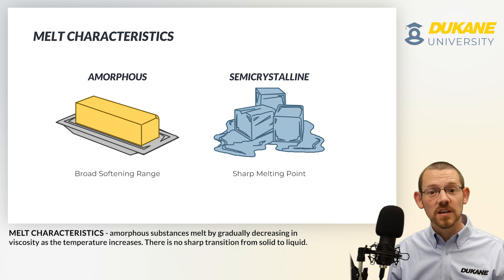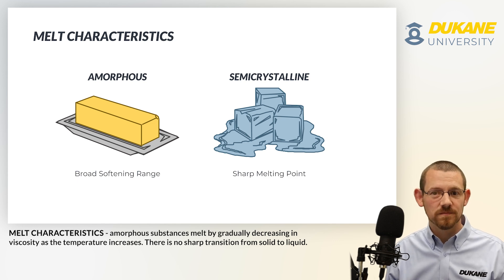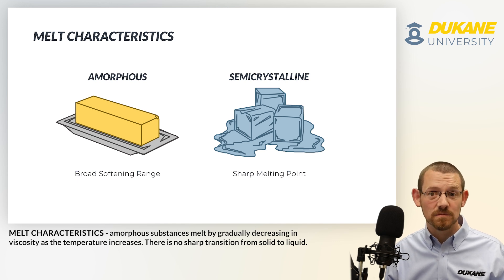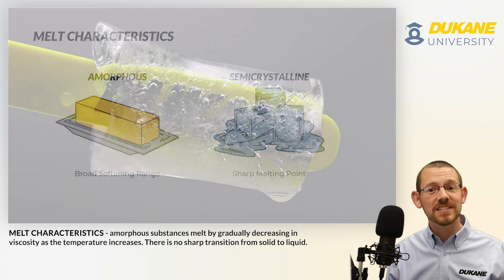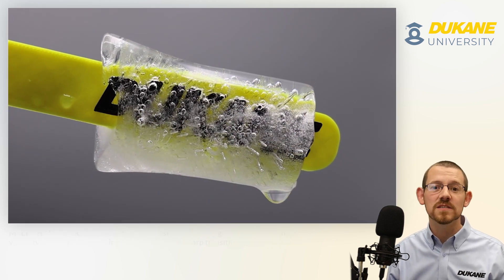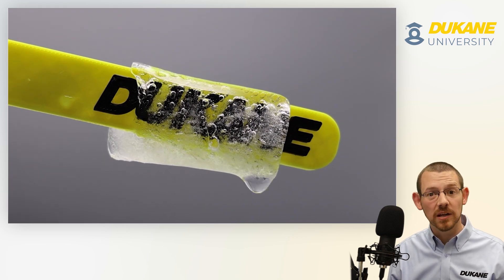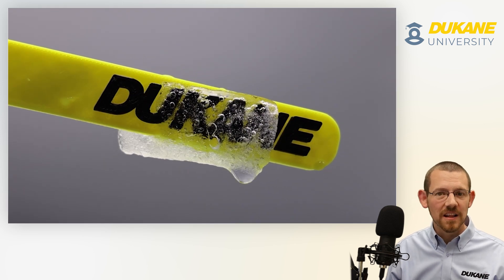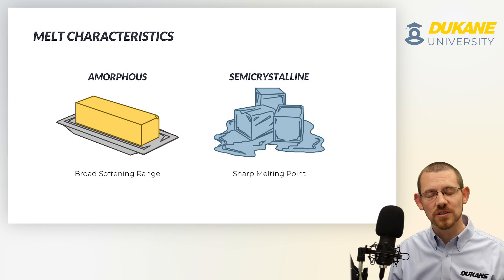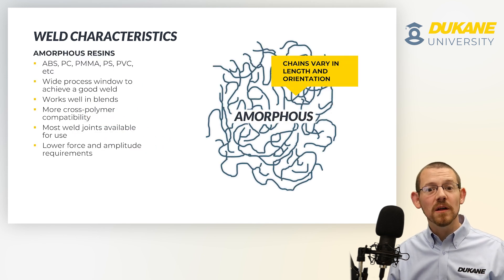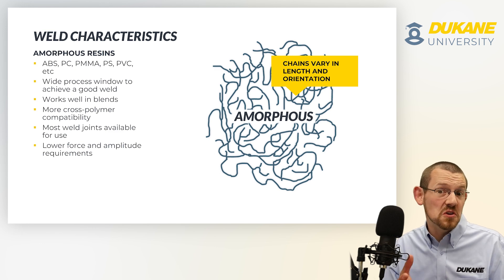This is how amorphous resins remelt when we process them using ultrasonics, and as a result, there are some real benefits to that. Semi-crystalline resins, on the other hand, act kind of like ice. If you place a cube of ice on a table, it stays solid until it reaches the melting temperature. Once it reaches the melting temperature, it transitions into a liquid — there is both a solid and a liquid present as it is transitioning. It has a sharp melting temperature. Because of that physical structure and melt behavior, we can describe the weld characteristics of these two families of resins.